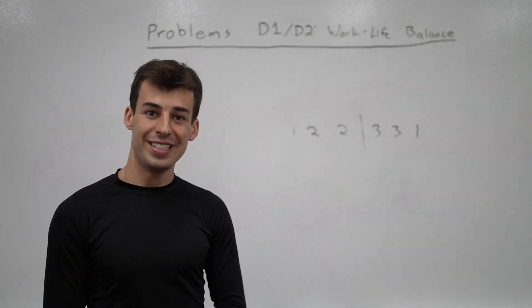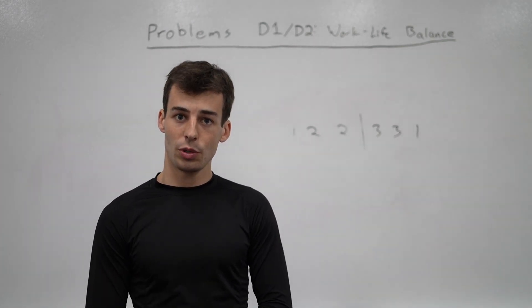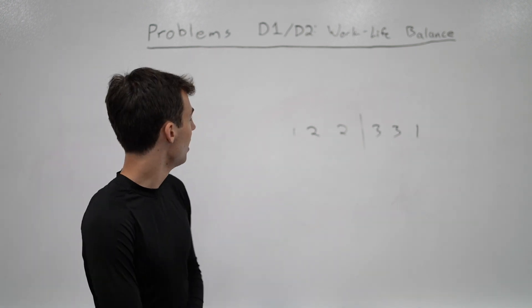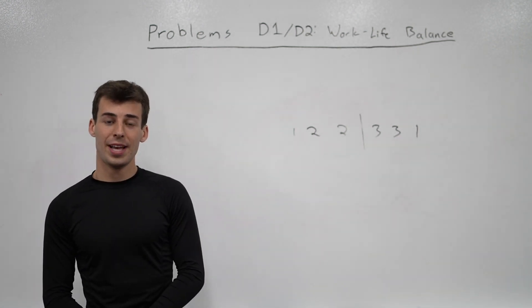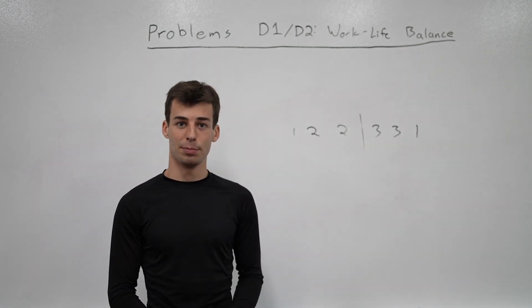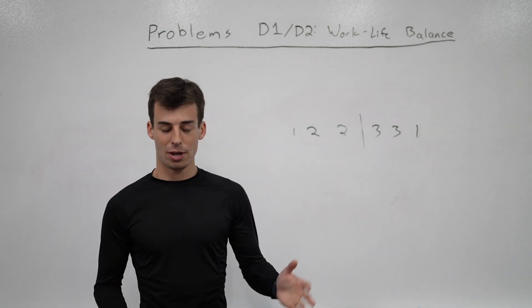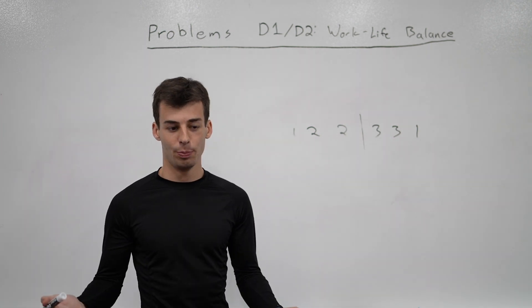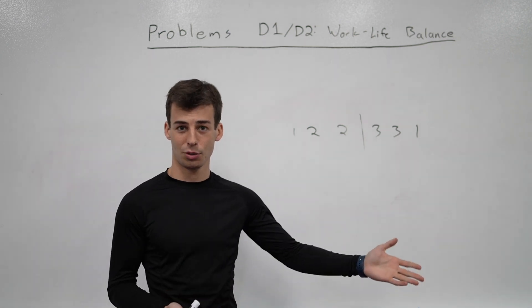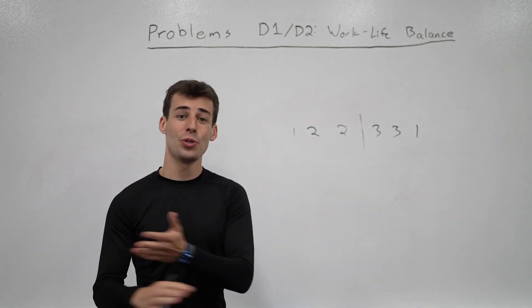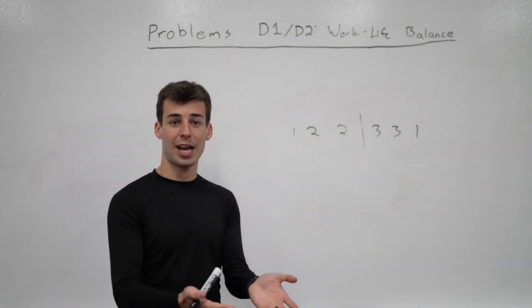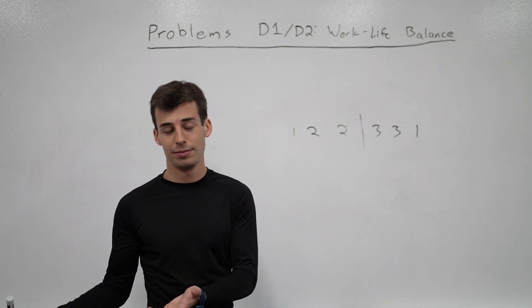Good morning and welcome to the solution videos to problems D1 and D2 of the 2022 Meta Hacker Cup. In this problem, boss Rob has given you n tasks which you have to complete, and you want to balance the amount of time you spend at work and time you spend at home. To do this, you're going to do the first so many tasks at work and the rest at home, and you want to reorder the tasks in such a way that the sum of time you'd spend at work is equal to the time at home.